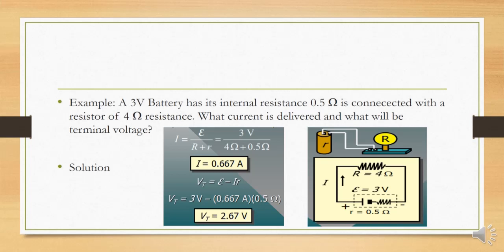In this example, a battery of 3 volts has an internal resistance of 0.5 ohms and is connected to a load resistor of 4 ohms. We need to find the current delivered and the terminal voltage. In the solution, I equals EMF divided by the total resistance. Putting in the values: EMF is 3 volts — the total chemical energy converted into electrical energy — divided by 4 ohms load resistance plus 0.5 ohms internal resistance.